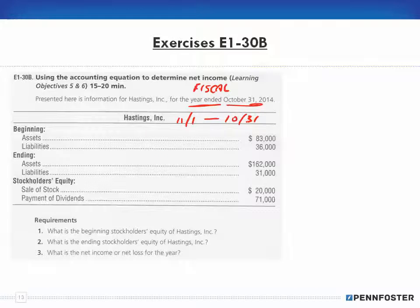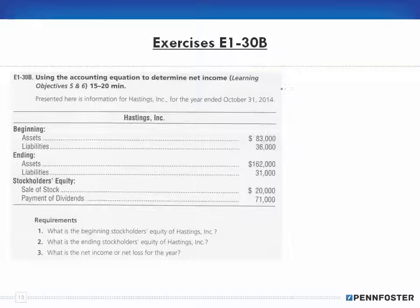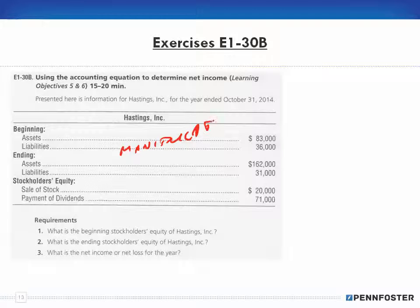Fiscal years are anything in between. In this case, it goes from November 1st through October 31st. Notice that this is not on a quarter. In one of the last videos I mentioned fiscal years — you can start your business on a quarterly basis if you use fiscal, but it's not absolutely necessary. This is the information: assets, liabilities — these are beginning assets and liabilities, and these are ending assets and liabilities. For stockholders' equity, you have a sale of stock and a payment of dividends. This is data that has to be manipulated in order to answer the requirements.